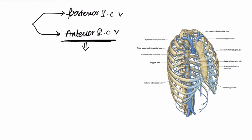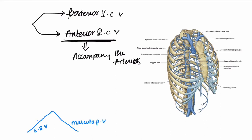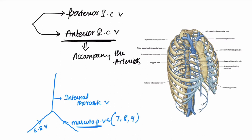Now let us discuss about them. We have superior epigastric vein and the musculophrenic vein. This superior epigastric vein and musculophrenic vein combine together to form the internal thoracic vein. The veins in the intercostal spaces 7, 8, 9 drain into the musculophrenic vein, and spaces 1 to 6 drain into the internal thoracic vein. This internal thoracic vein drains into the brachiocephalic vein.